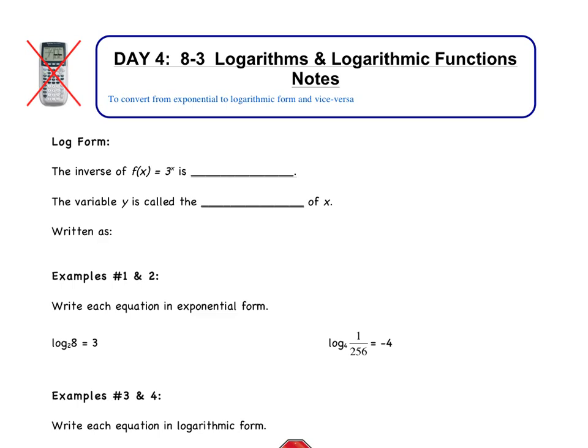So first we should talk about what is log form. The inverse of f(x) = 3^x, so this is y = 3^x. The inverse just means flip x and y. So the inverse is x = 3^y. The variable y is called the logarithm of x. So instead of writing it as x = 3^y, this is the same thing as log base 3 of x equals y. So here is our base and here is our exponent. So logs are really just a way to re-express an exponential equation.